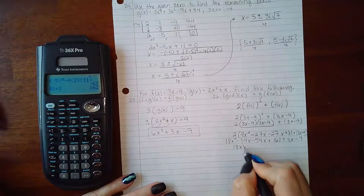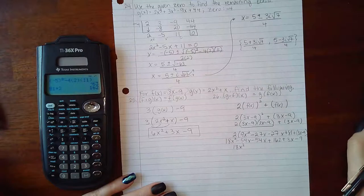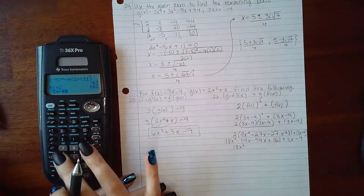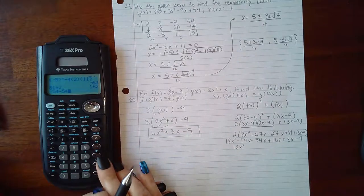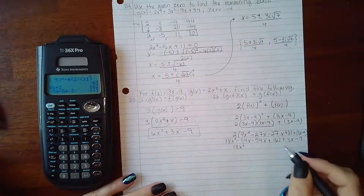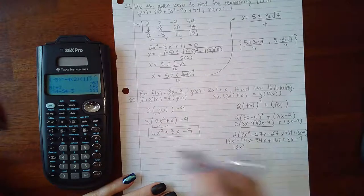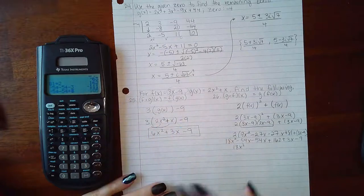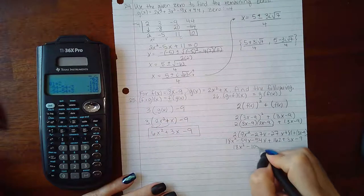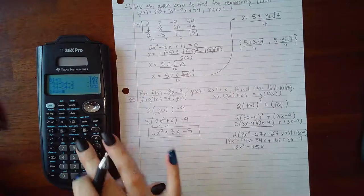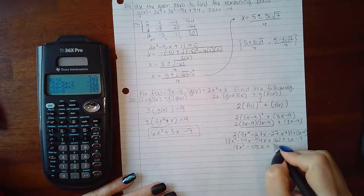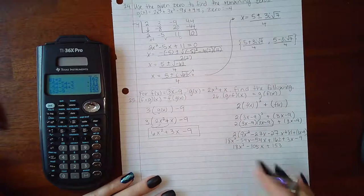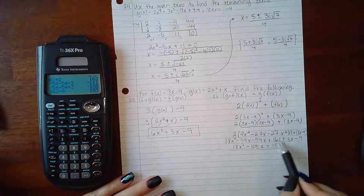So if I combine my like terms I should end up with 18x squared, negative 105x, and then 162 minus 9 is positive 153. And so this is the expression that we get for g of f.